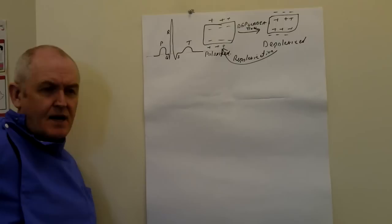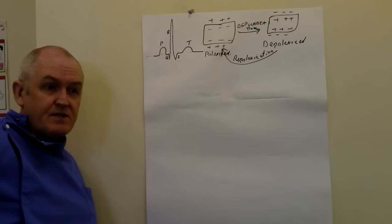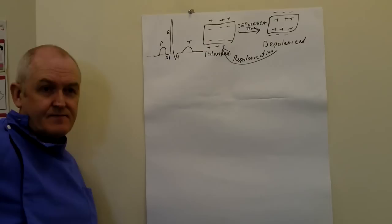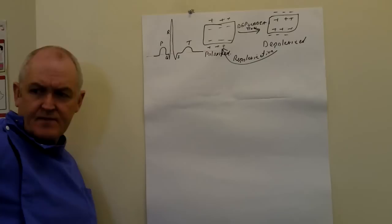The electrical activity that initiates this is generated in an area in the right atrium called the sinoatrial node, or the pacemaker of the heart. That's where this rhythm comes from. This rhythm is modified by external sympathetic and parasympathetic stimulation from sympathetic nerves and from the parasympathetic nerve that supplies the heart. The parasympathetic nerve that supplies the heart is the vagus nerve.